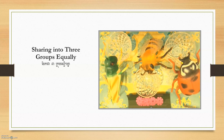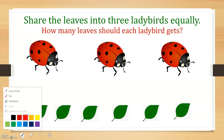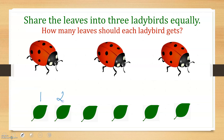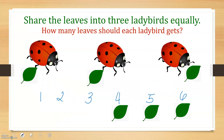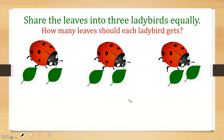Sharing into three groups equally. Share the leaves into three ladybirds equally. How many leaves should each ladybird get? Let's count how many leaves there are: one, two, three, four, five, six leaves. How many leaves should each ladybird get? One, two — one, two — one, two. Each ladybird gets two leaves.